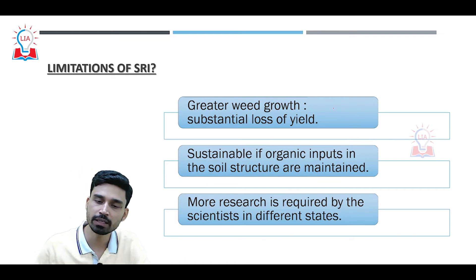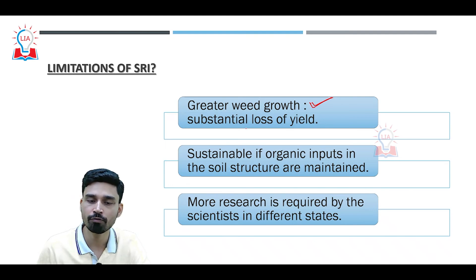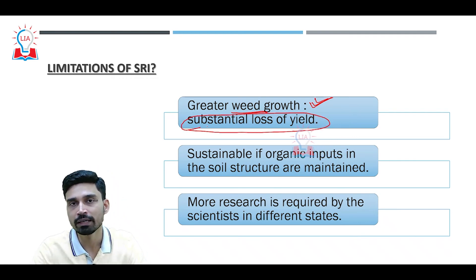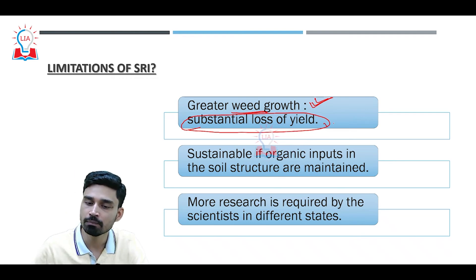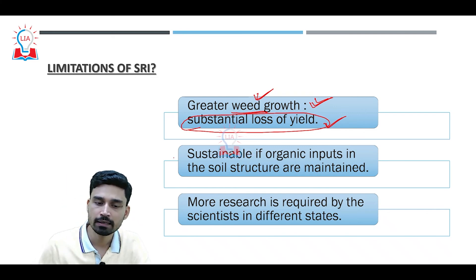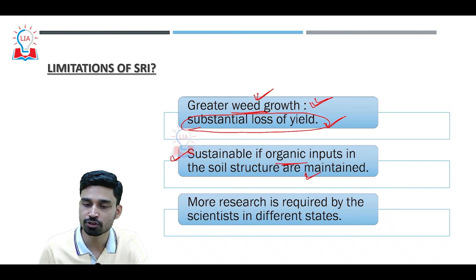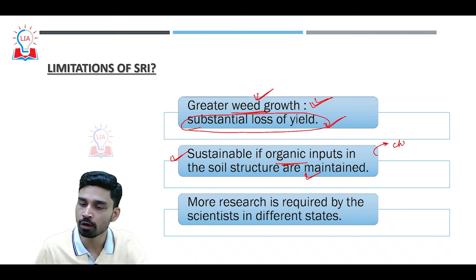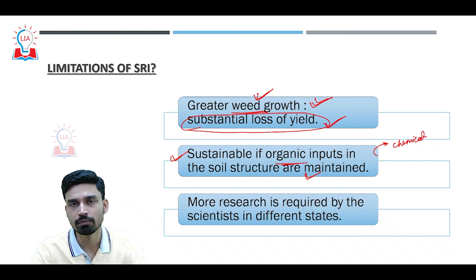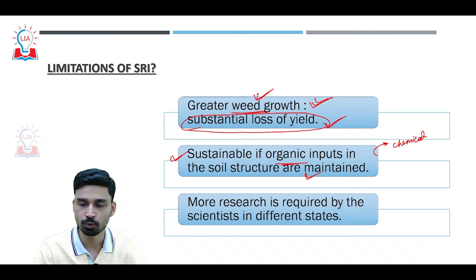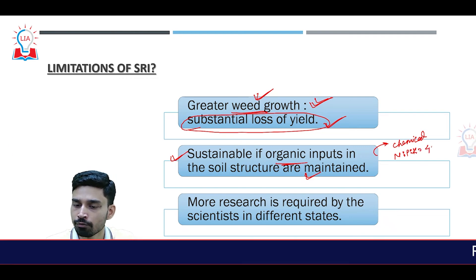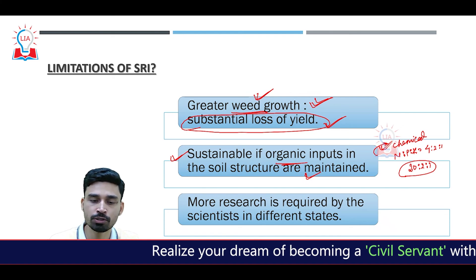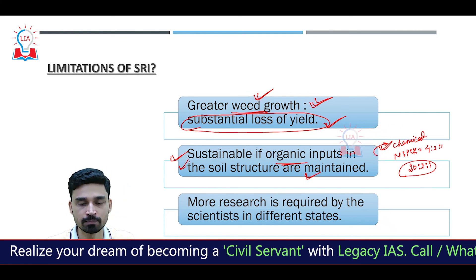However, the SRI system is not free from limitations. First, there is a high possibility of greater weed growth, and if unchecked, it can cause substantial yield loss — completely negating the gains expected from SRI. Second, the system is sustainable only if organic inputs in the soil are maintained, which is a problem in India where farmers are heavily dependent on chemical fertilizers in skewed ratios. For example, the normal ratio of nitrogen to phosphorus to potash should be 4:2:1, but in some regions of Punjab it is as high as 20:2:1.